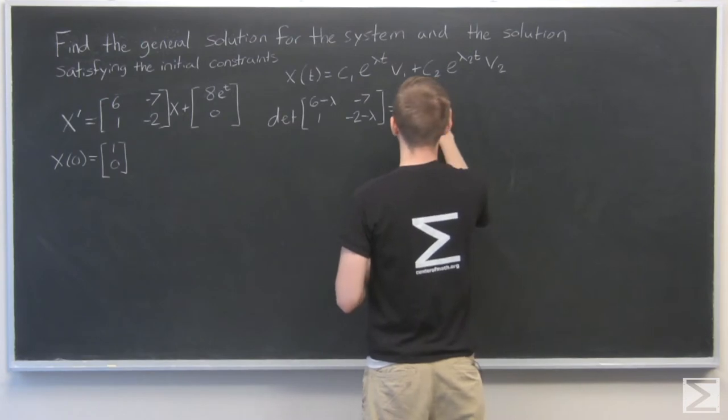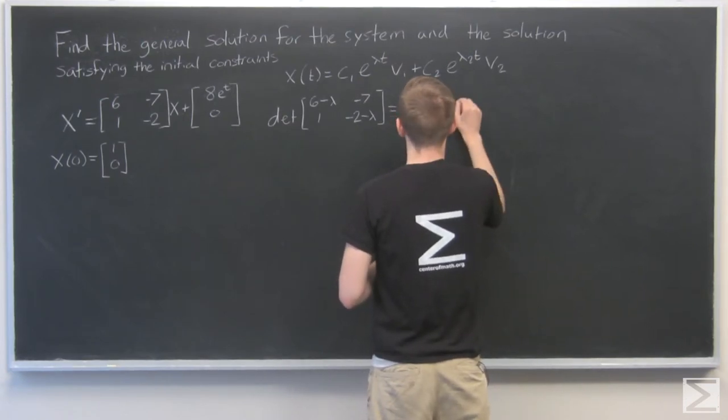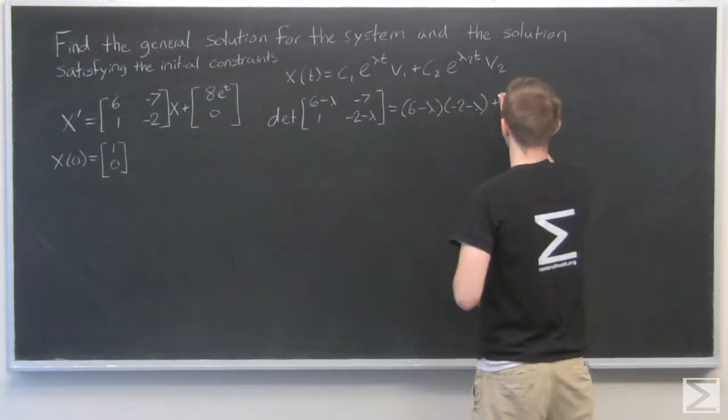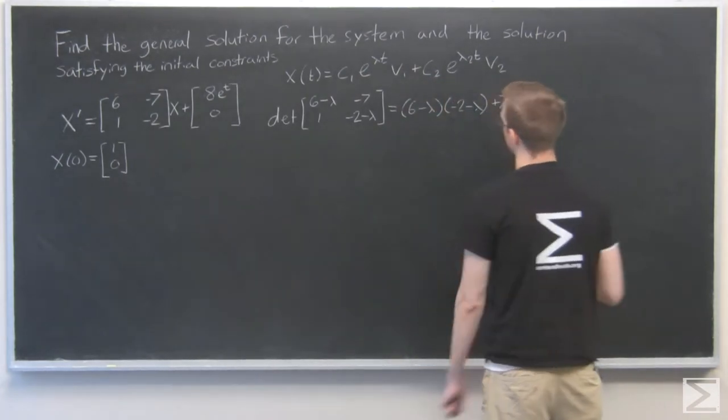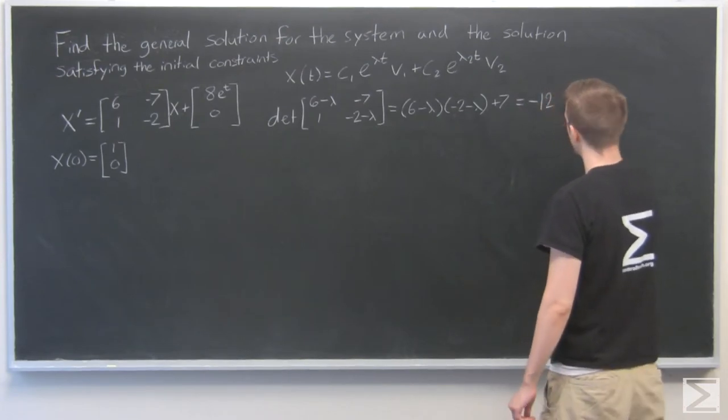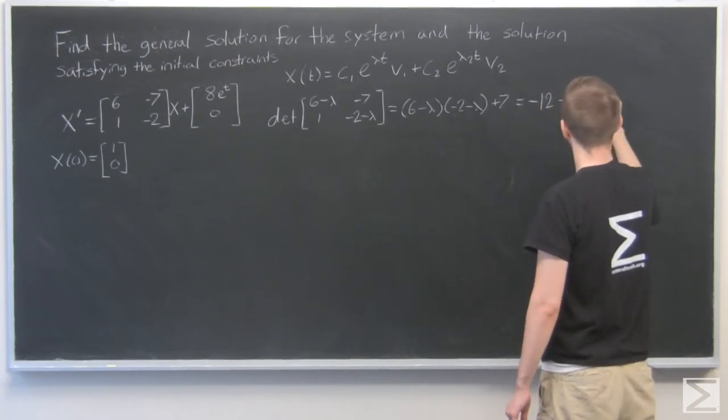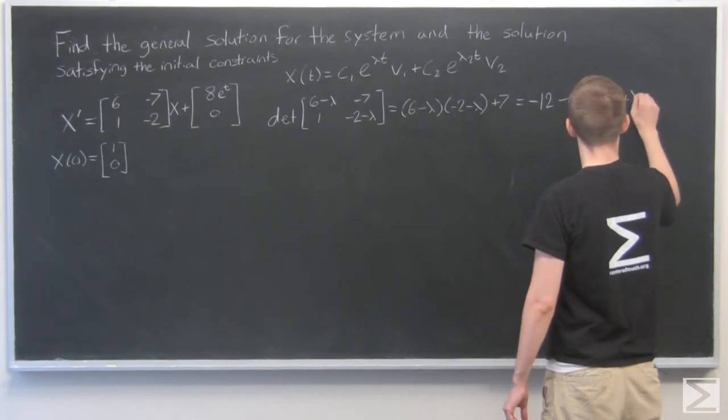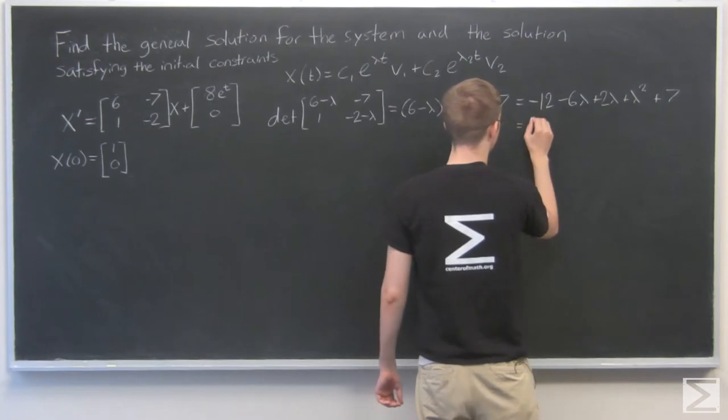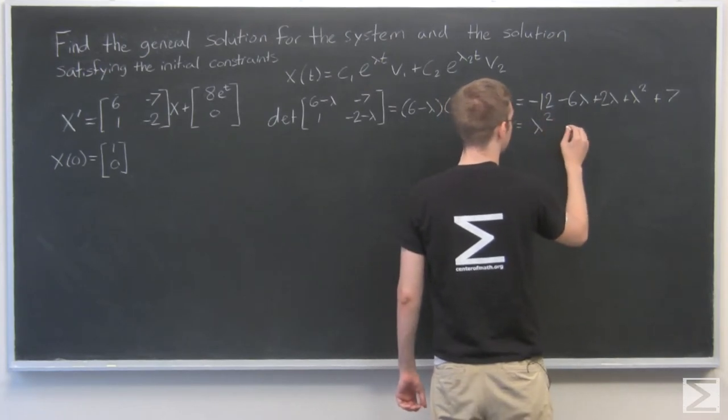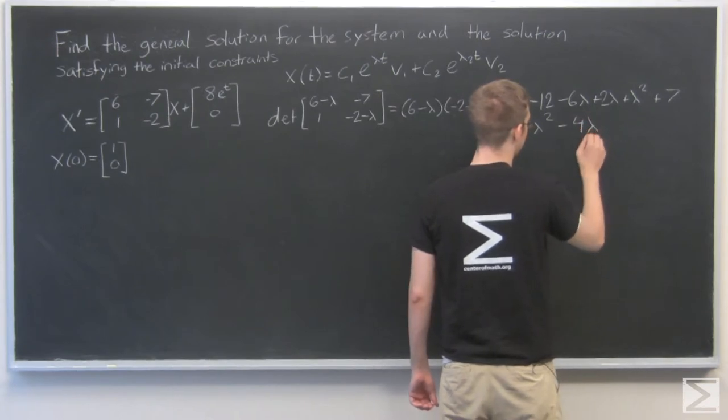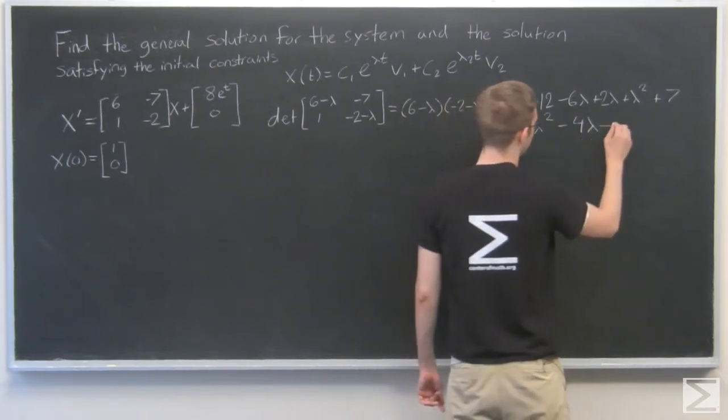And that's equal to (6 - lambda) times (-2 - lambda) plus 7. That's equal to -12 - 6*lambda + 2*lambda + lambda^2 + 7, which is lambda^2 - 4*lambda and minus 5.